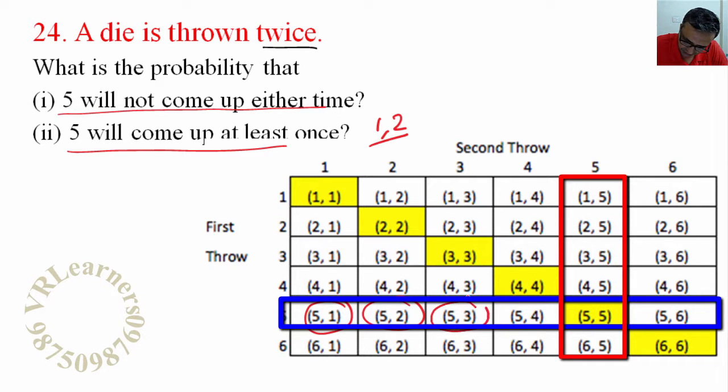2, 3, 4, 5, 6, 7, 8, 9, 10, and this is 11. So total 11 times 5 has appeared, whether it came once or twice. Simple.